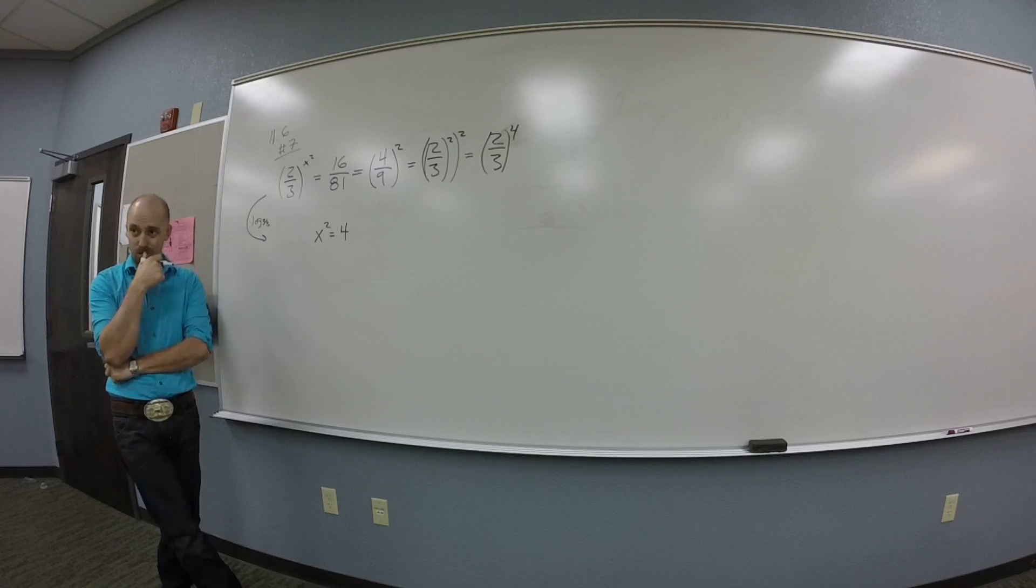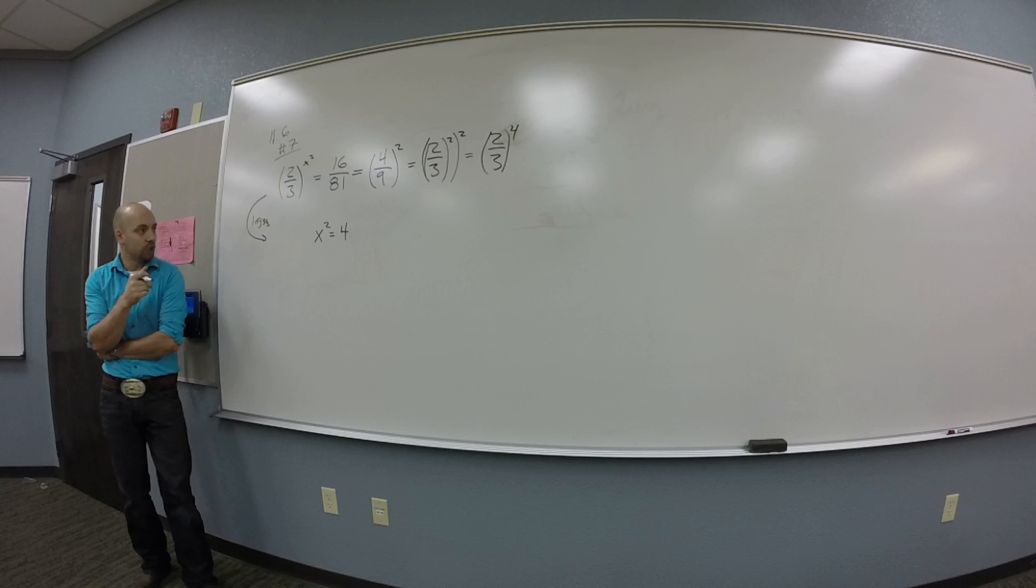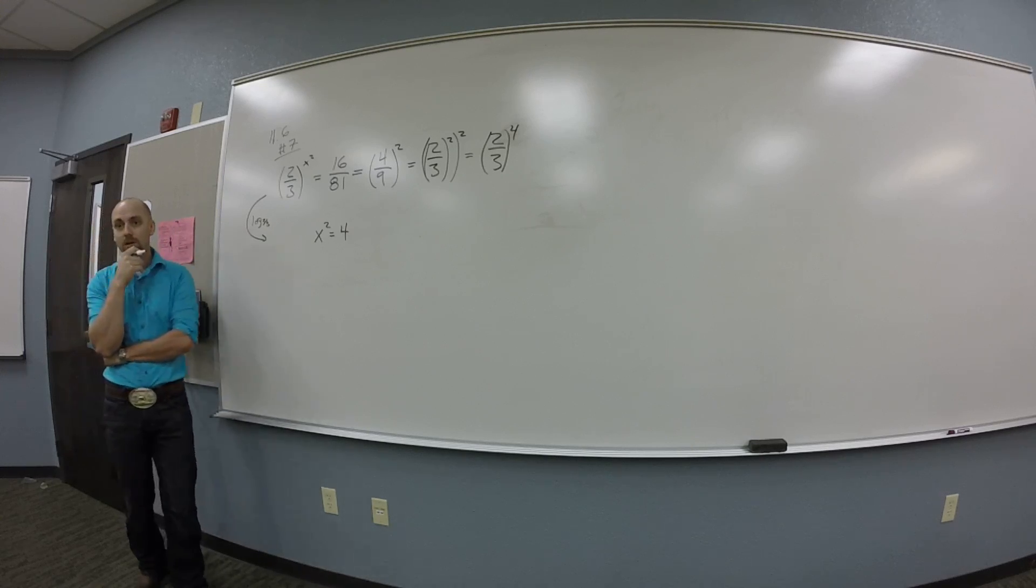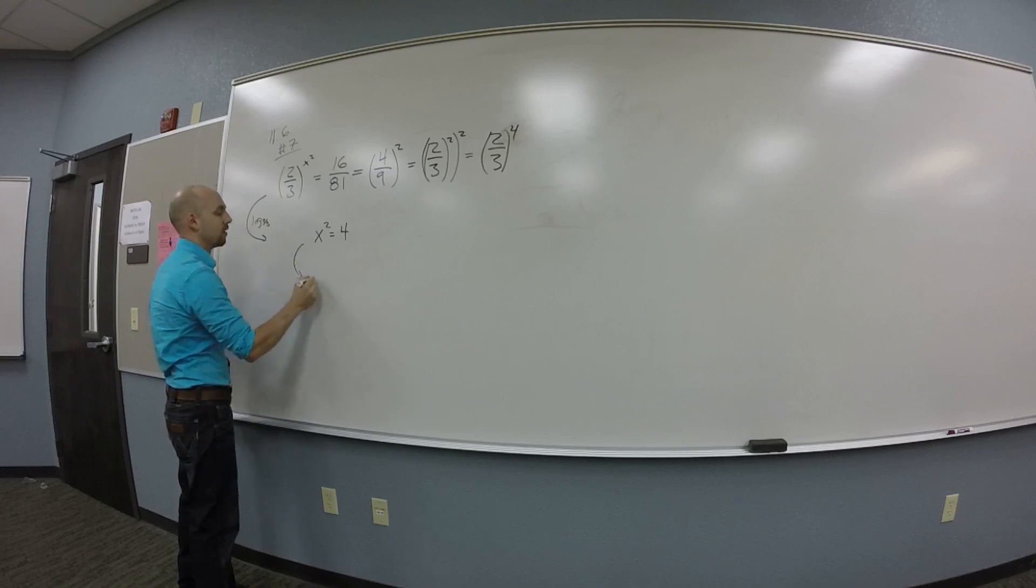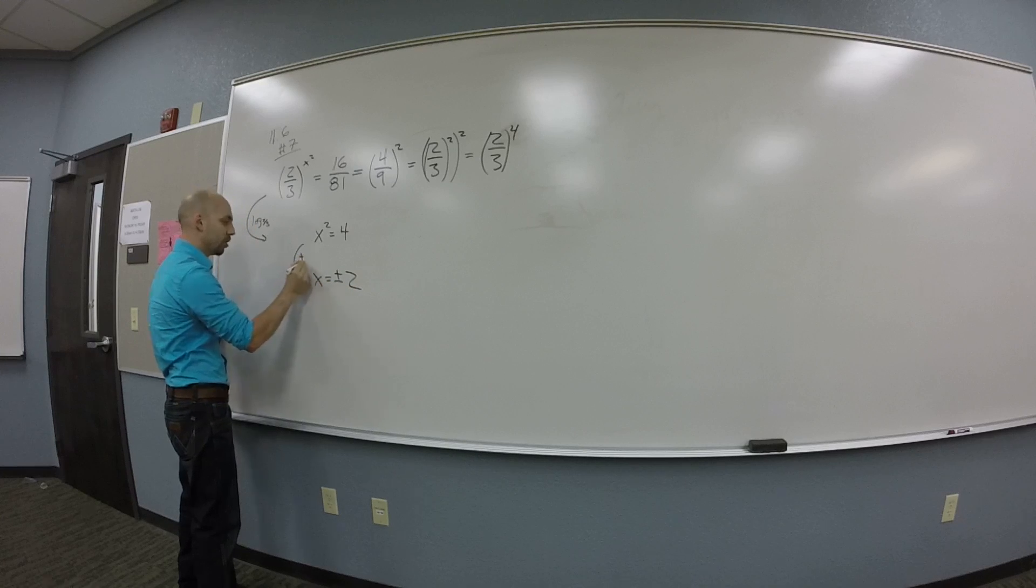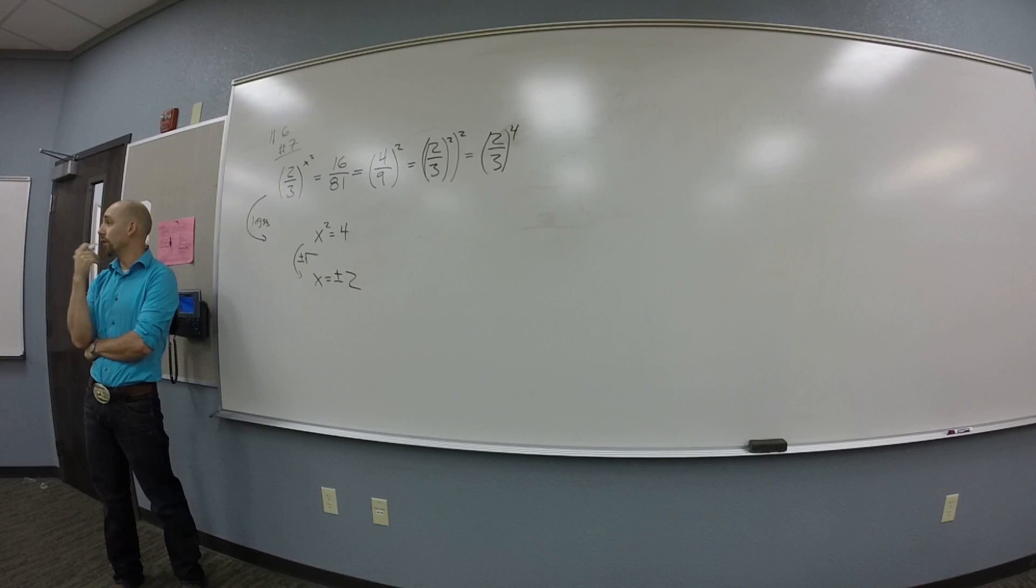So now that I've got x squared is 4, what do I do? Square root of 4. Oh, yeah. This is like a chapter 7 or something problem, right? So I should get plus minus 2. So you're doing plus minus square root to both sides, right? Okay.